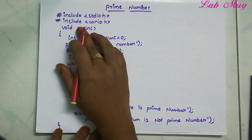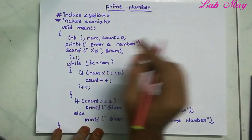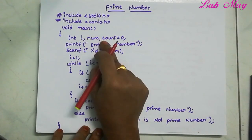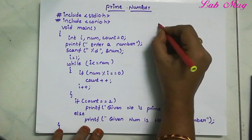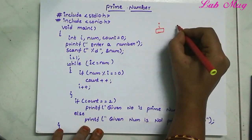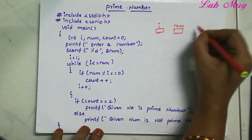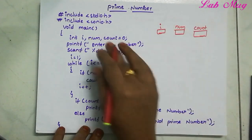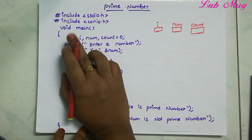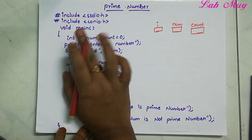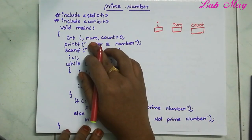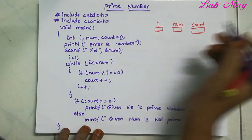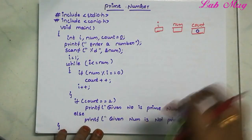I am writing the program. Hash include stdio.h and hash include conio.h. Main function. I am declaring three variables: i, number, and counter — all integers. Two bytes of memory are allocated for each. The default value of count is set to 0.